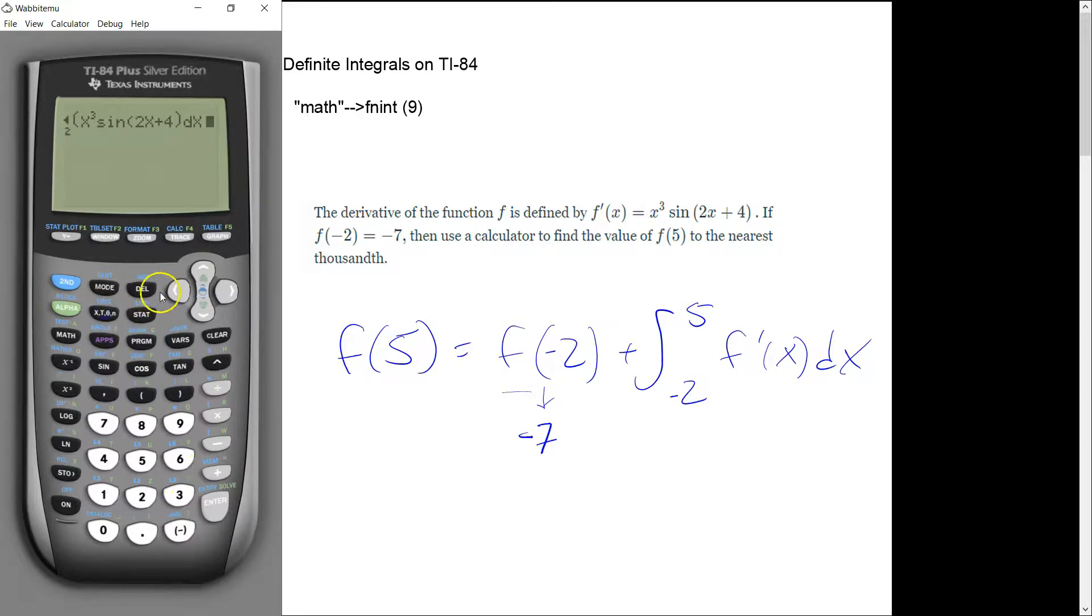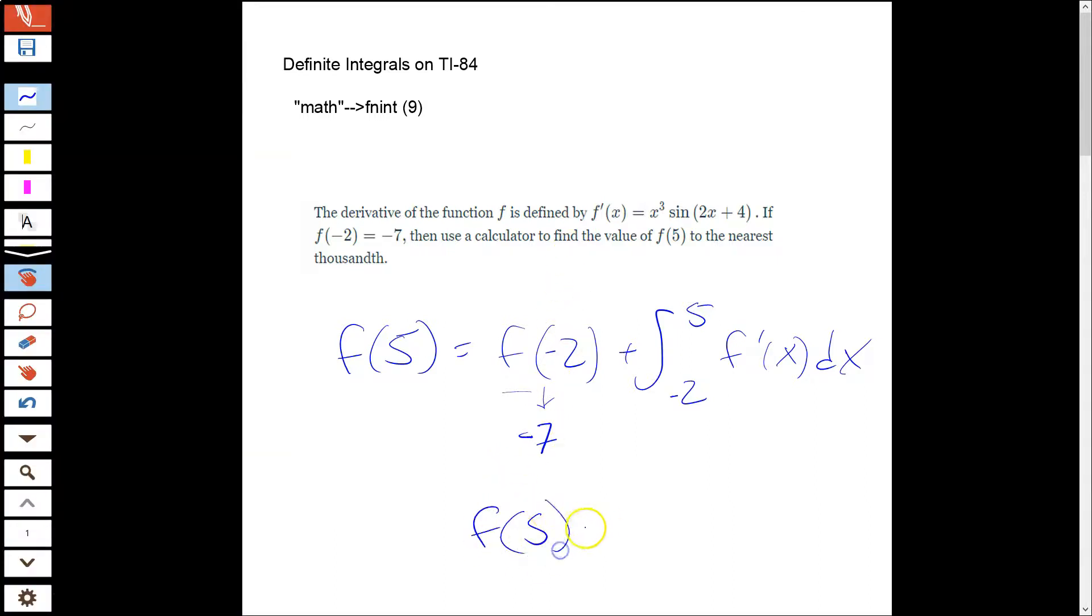And then I hit enter. Cross my fingers. Let it think a little bit. And I get 0.669. And that's just my answer. I'm going to round to three decimal places as we always do in AP Calculus. So I'm going to say that f(5) is approximately 0.669. And that's it.